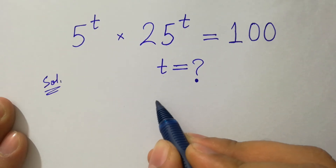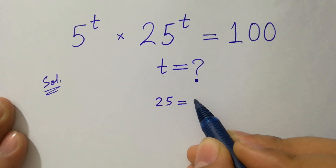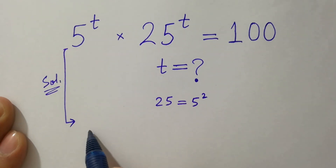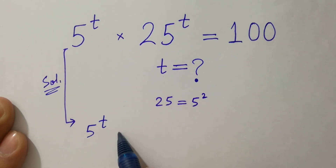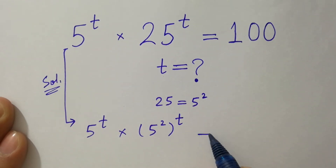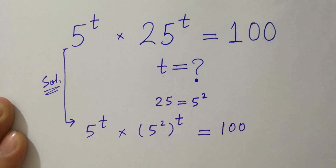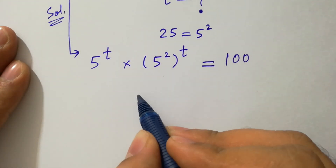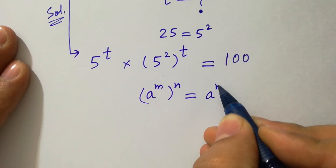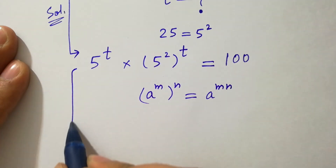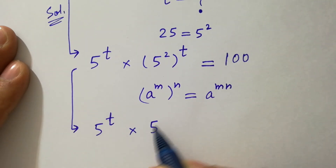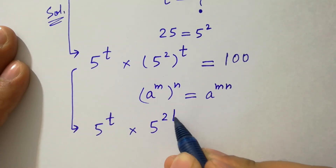Since 25 equals 5 times 5, that is 5 squared, then it will be 5 to the power t times 5 squared to the power t equal to 100. As a to the power m, to the whole power n, equals a to the power mn, then we have 5 to the power t times 5 to the power 2t equal to 100.